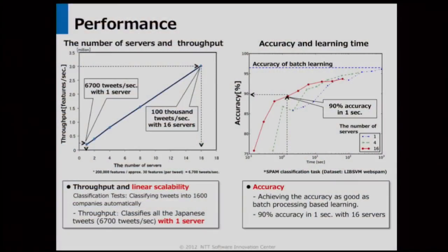You can see the demonstration in the poster session. Here's the performance of Ubatas. The left figure shows the throughput and the number of servers — Ubatas is linearly scalable. It can process 200,000 features per second with one server. That means if one tweet contains 30 features, it can classify all the Japanese tweets with one server.